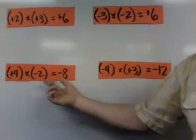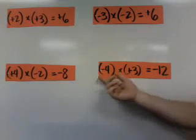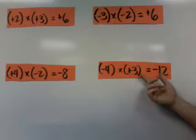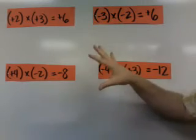Positive 4 times negative 2 is negative 8. And negative 4 times positive 3 is negative 12. So we remember all that sort of stuff.